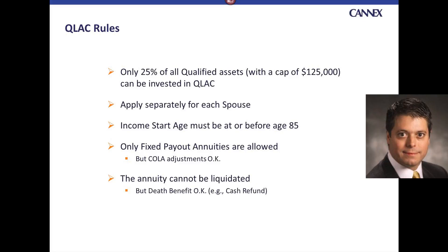Finally, the annuity cannot be liquidated. The majority of income annuities and deferred income annuities available today do provide some form of recourse — if you change your mind, you can go back to the insurance company and they can commute that contract and give some money back. But in the case of extending longevity out over a long period of time, the government has put a restriction on that for these types of contracts. They are, however, okay with the death benefit going to the estate if the obligation is still paid out to the heirs.